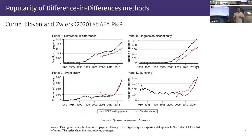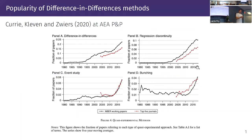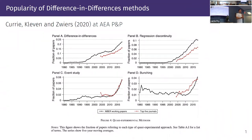So if we stop and think about differences-in-differences, the first question is: why should I care? Why is this important, why did we spend so much time writing this paper? To motivate this, we leverage a very nice paper by Currie, Kleven, and Zwiers in 2020 in the American Economic Association Papers and Proceedings. What they did is zoom in at the NBER working paper series in economics and the top five empirical papers in economics, using a machine learning procedure to capture how often several terms have been used throughout the years.